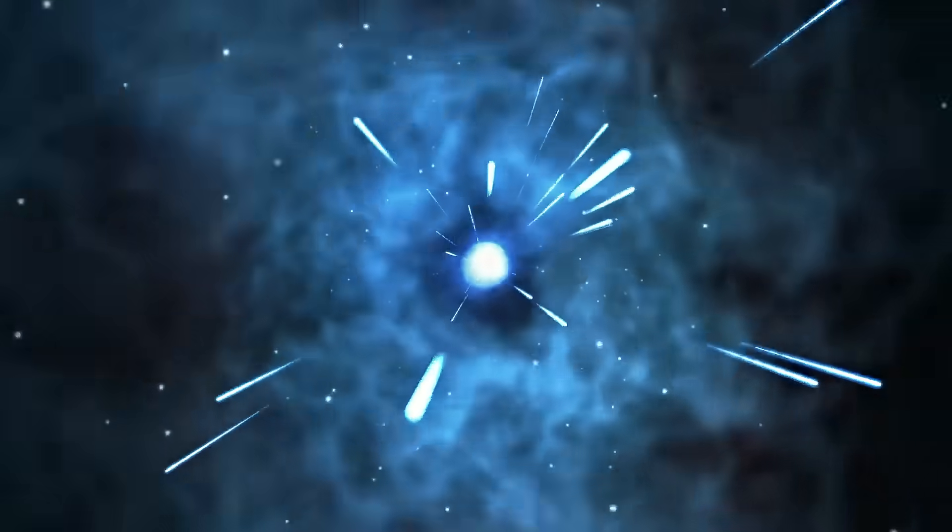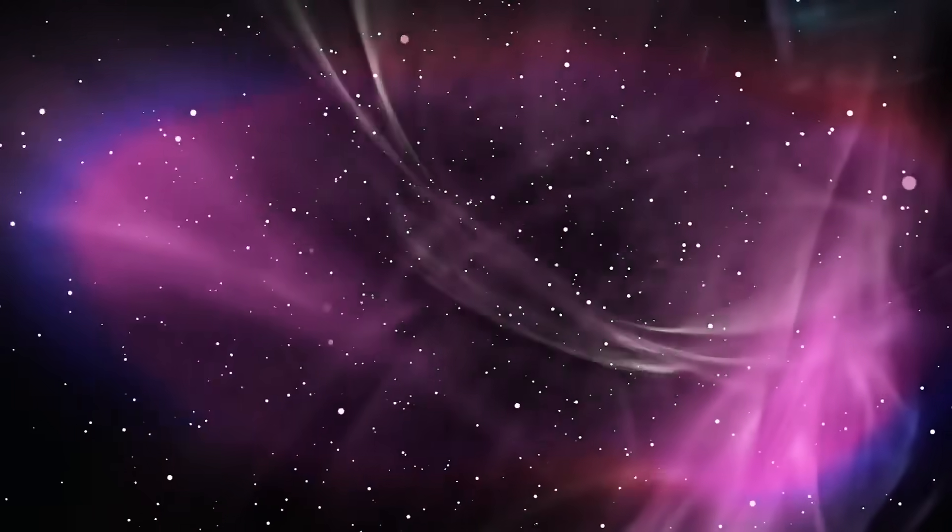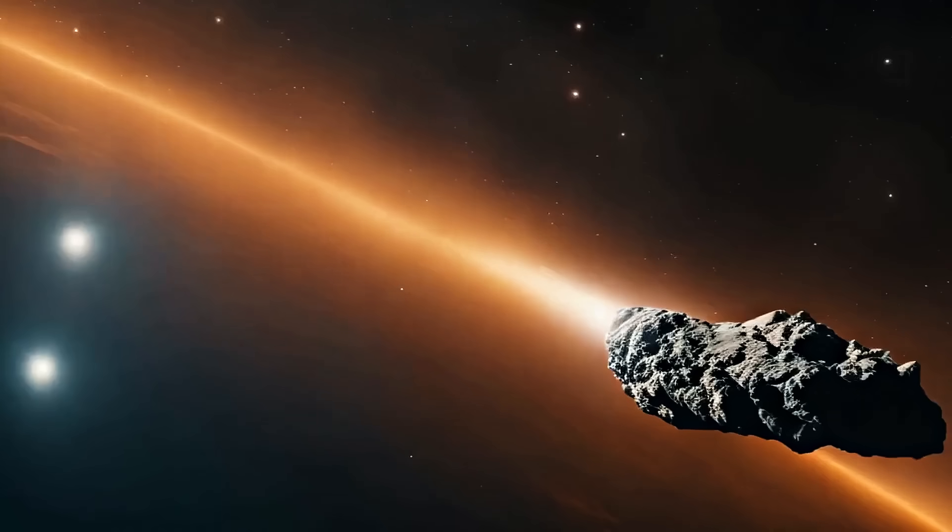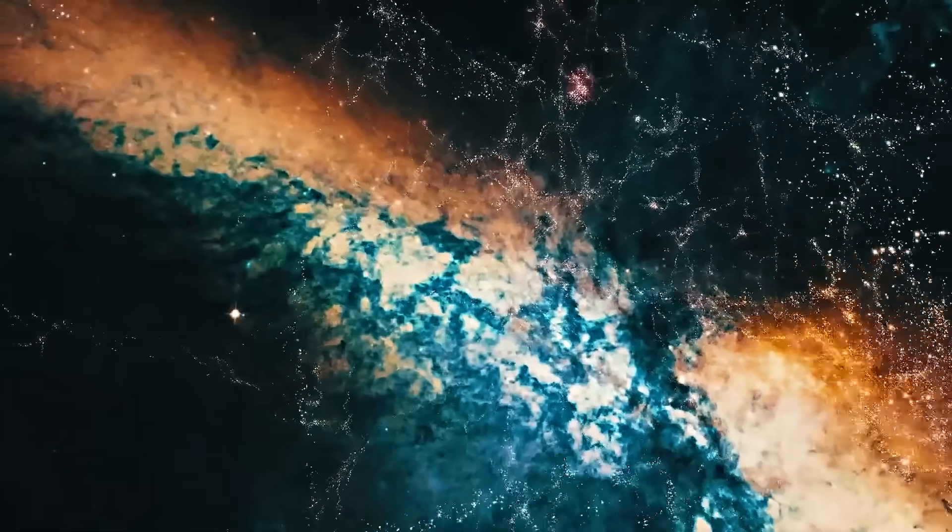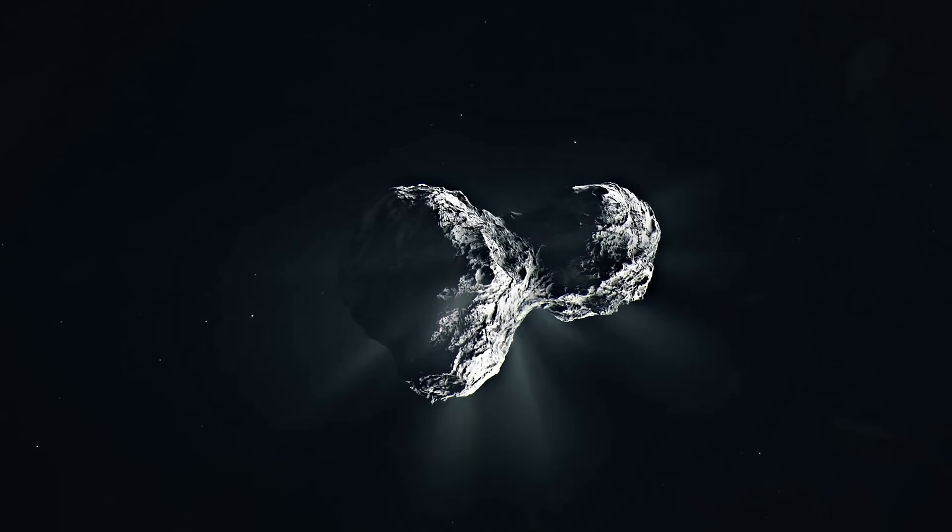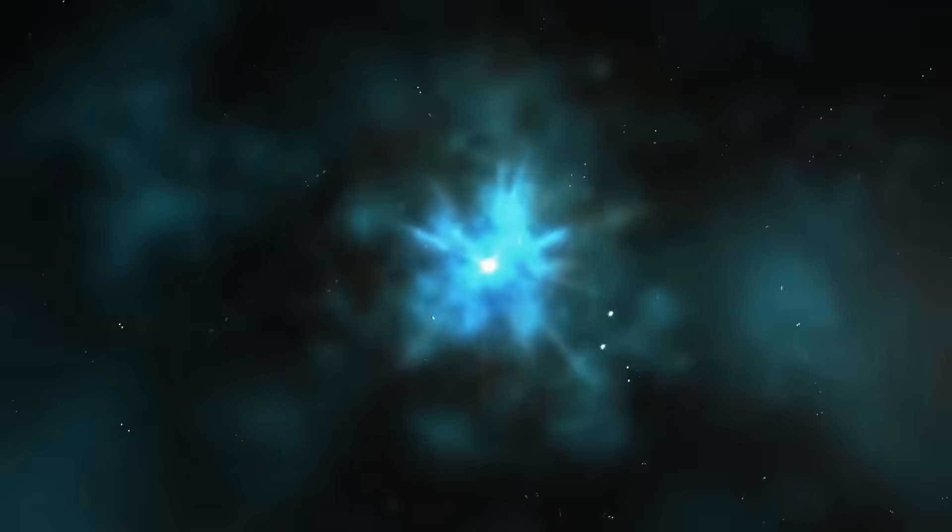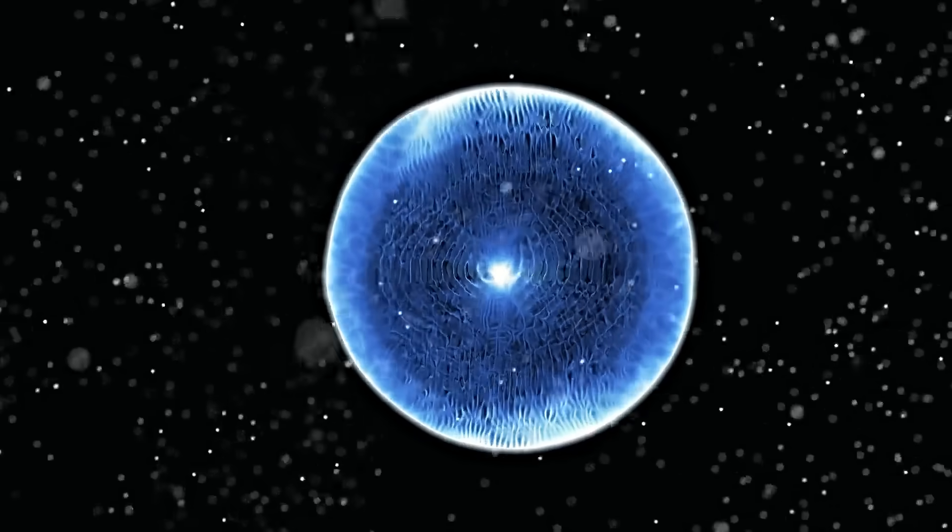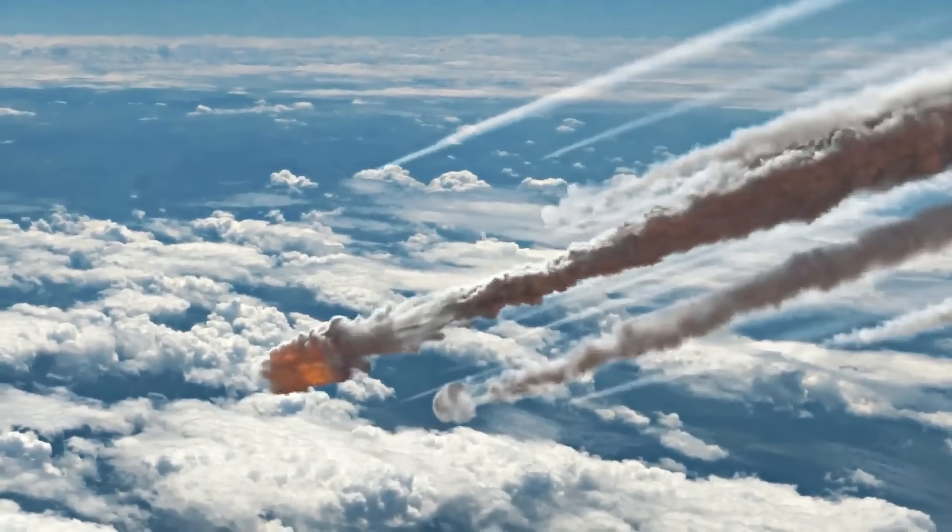3I Atlas is different. It's large, bright, perfectly aligned with the planets, and emits jets that defy the sun's force. It breaks every known model of how comets behave. Astronomers now suspect its composition is unusual, possibly containing metallic compounds or exotic ices that react differently to sunlight. Others go further, suggesting an artificial structure could explain its symmetry and propulsion-like jet.